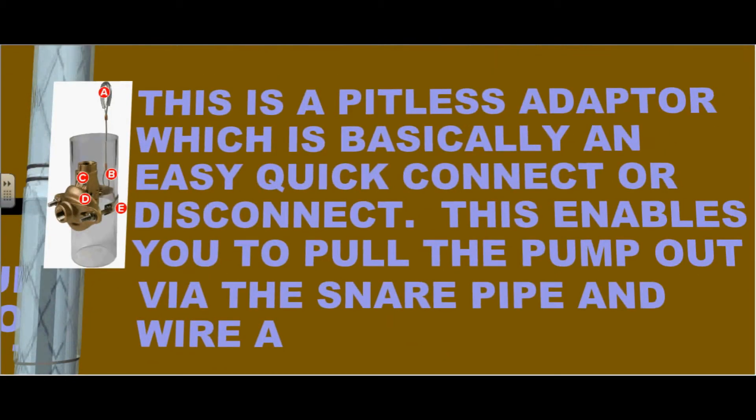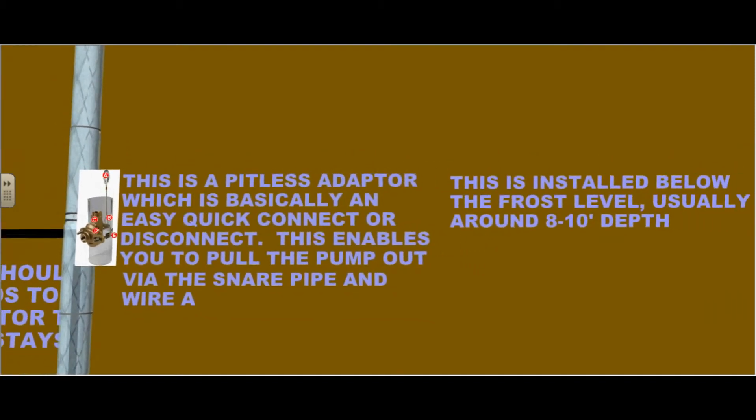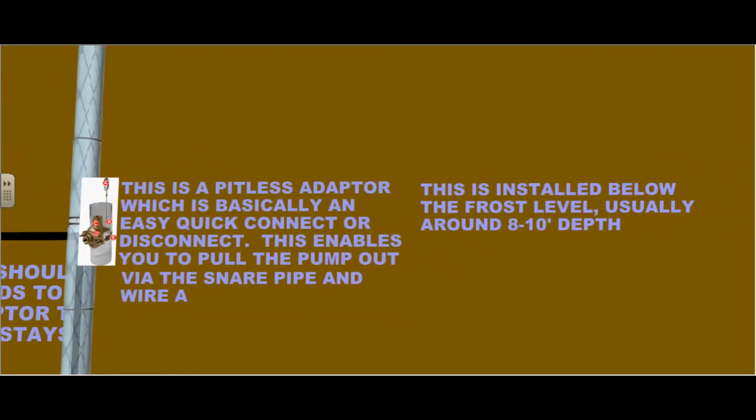This is a pitless adapter which is basically an easy quick connect or disconnect. This enables you to pull the pump out via the snare pipe and wire. This is installed below the frost level, usually around 8 to 10 foot in depth.